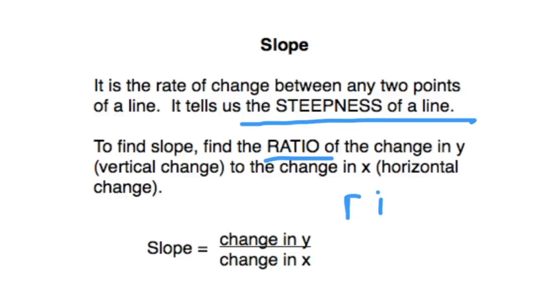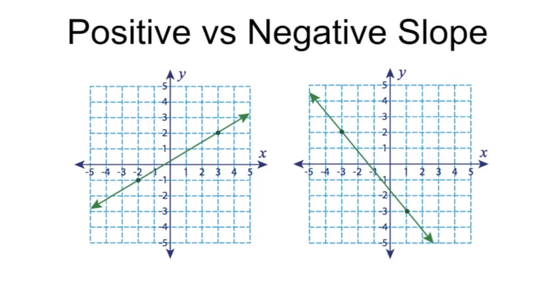Another way people memorize this is they just memorize rise over run. Rise is the vertical, run is the horizontal component.